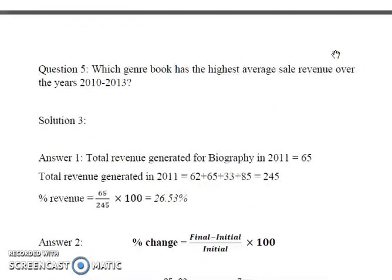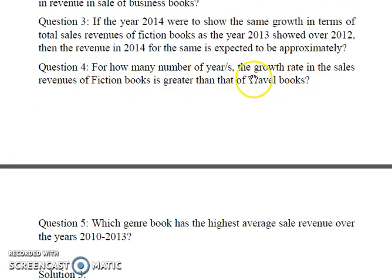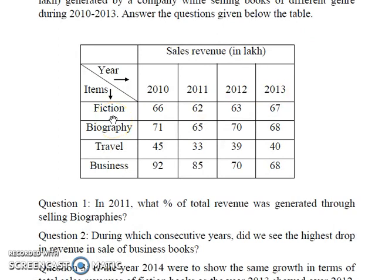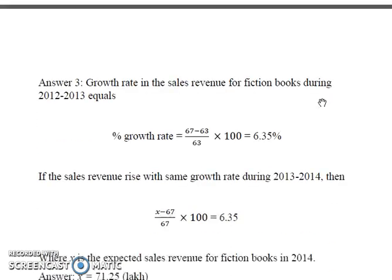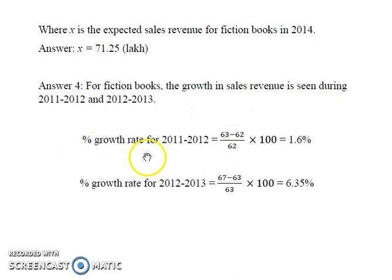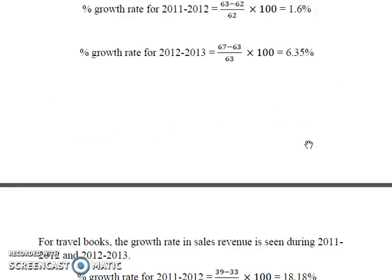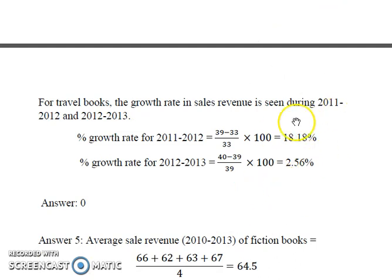Coming to the next question: for how many years did the growth rate in the sales revenue of fiction books exceed that of travel books? For fiction books, growth in sales revenue is observed during 2011-2012 and 2012-2013. We compute the percentage growth rate in the same manner as before. For travel books also, positive growth rate is seen during 2011-2012 and 2012-2013. Calculating and comparing the growth rates, we see that the percentage growth rate in sales revenue for travel books is always greater than that of fiction books. Therefore our answer is zero.